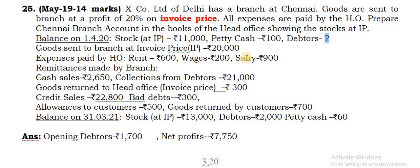Goods sent to branch - take on debit side. Expenses paid by the head office - take on debit side. Remittances by the branch - these you take on credit side. Goods returned to head office at invoice price - credit side. Credit sales - take only in the debtors account on debit side. Bad debts - debtors account credit side. Allowances to customers - debtors account credit side. Goods returned by customers (sales returns) - debtors account credit side.